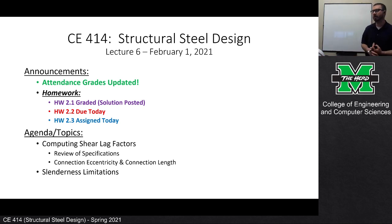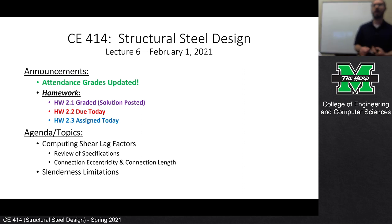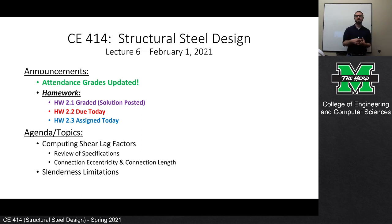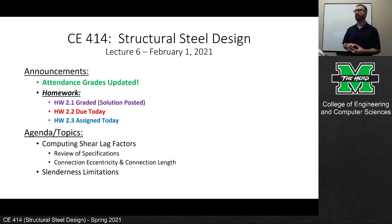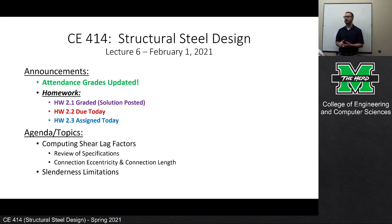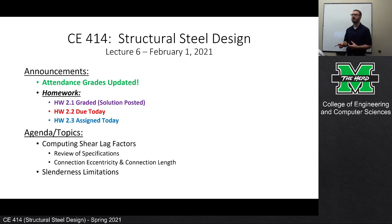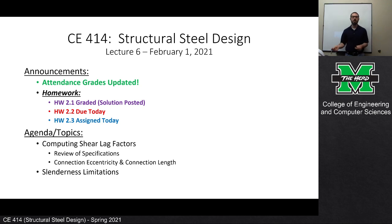The homework solution for 2.1 is posted and has been graded. You all turned in 2.2 today, and we had two assignments on gross and net area. This assignment and what we're talking about today closes the loop on all the dangling topics related to tension members. Because when we come back Wednesday, we'll be able to do problems that would have taken a couple of class periods in about half an hour, since we took time to handle all these tangential topics.